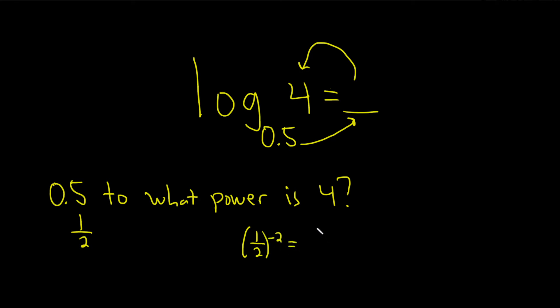That's really 1 to the negative 2 over 2 to the negative 2 using properties of exponents. That's really 1 over 2 to the negative 2 because 1 to any power is 1. You bring it upstairs, you get 2 squared, and so that's 4.